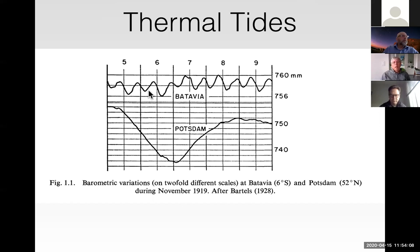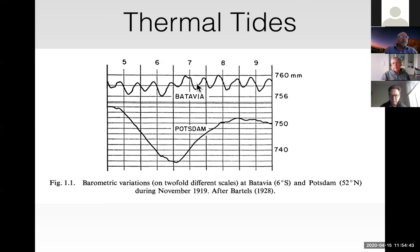Here's a plot showing barometric pressure in what was then called Batavia — now Jakarta. In millimeters of mercury, you can see it going up and down by about a millimeter of mercury twice a day. So there's a peak, then a second peak — that's the semi-diurnal tide. There's also a diurnal signal but it's harder to see by eye. Batavia is near the equator. A second plot shows a barometer at the same time in Potsdam, Germany — much farther from the equator — and there you can't see any signature of the semi-diurnal tide, just the large weather signal.